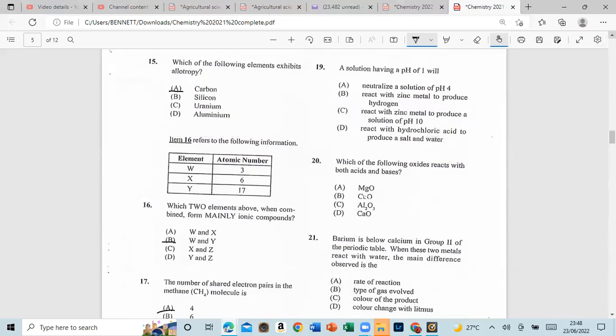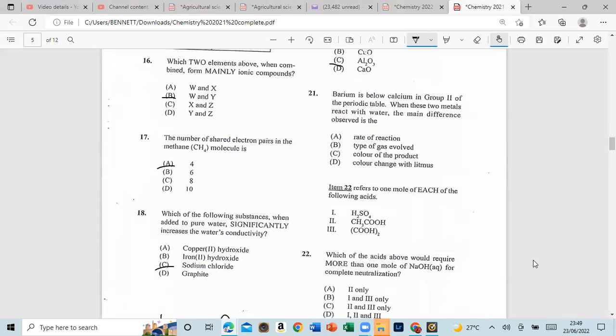Number 19, which is at the top. A solution having a pH of 1 will, and that is P, react with zinc metal to produce hydrogen. Number 20, which of the following oxides reacts with both acid and bases? And that is C. Number 21, barium is below calcium in Group 2 of the periodic table. When these two metals react with water, the main difference observed is the rate of reaction.